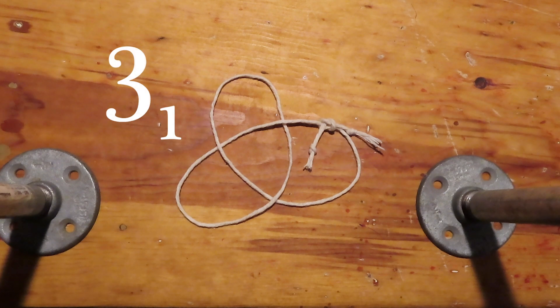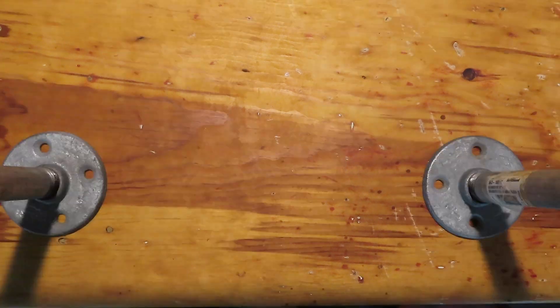As the overhand or trefoil was the only prime knot with three crossings, the figure eight knot is the only one with four. Let's tie in.